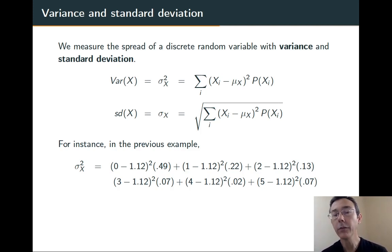For each of those outcomes, each of those values that x can take, for example 0, I subtract off the mean, 0 minus 1.12, square the result, and multiply by the corresponding probability. I add all that up. In this case, I get 2.19 for the variance. The standard deviation, then, is 1.48.